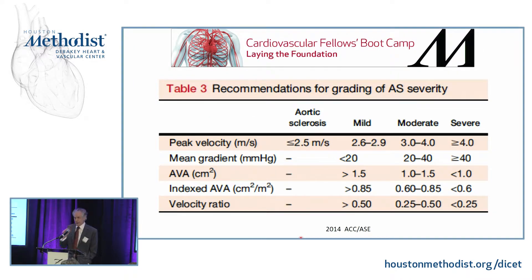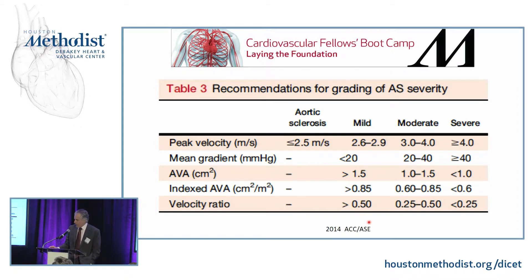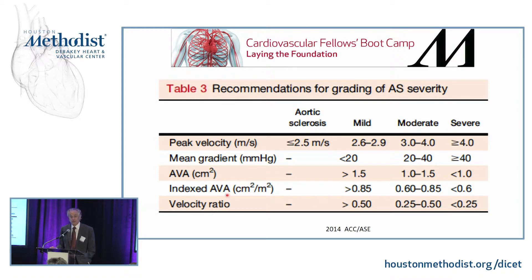These are the criteria we use to diagnose and grade aortic stenosis: a peak velocity of four meters per second, a mean gradient of 40 millimeters of mercury, and an indexed aortic valve area of 0.6 centimeters squared per meter squared. Depending on which measurement you're relying on for diagnosis, these will be more or less affected by transvalvular flow and ejection fraction.